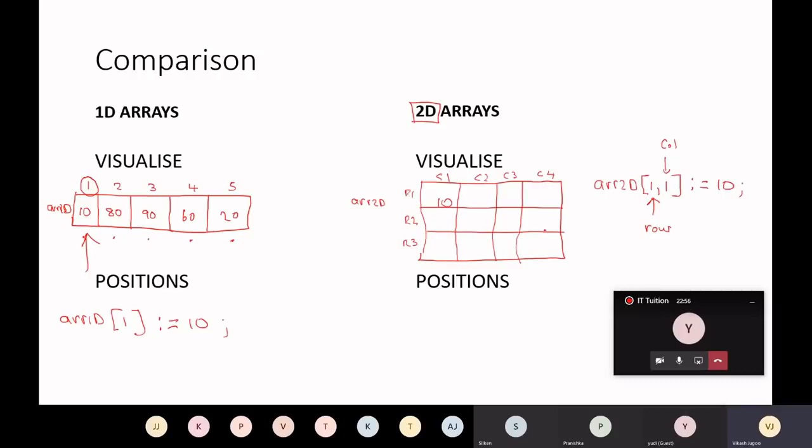So if we wanted to put a value of 70 here, we would then say something like this. ARR2D, this is now in row 3. So this is going to be 3, and that's going to be in column 4. So we'll say 3, 4 takes on the value 70.